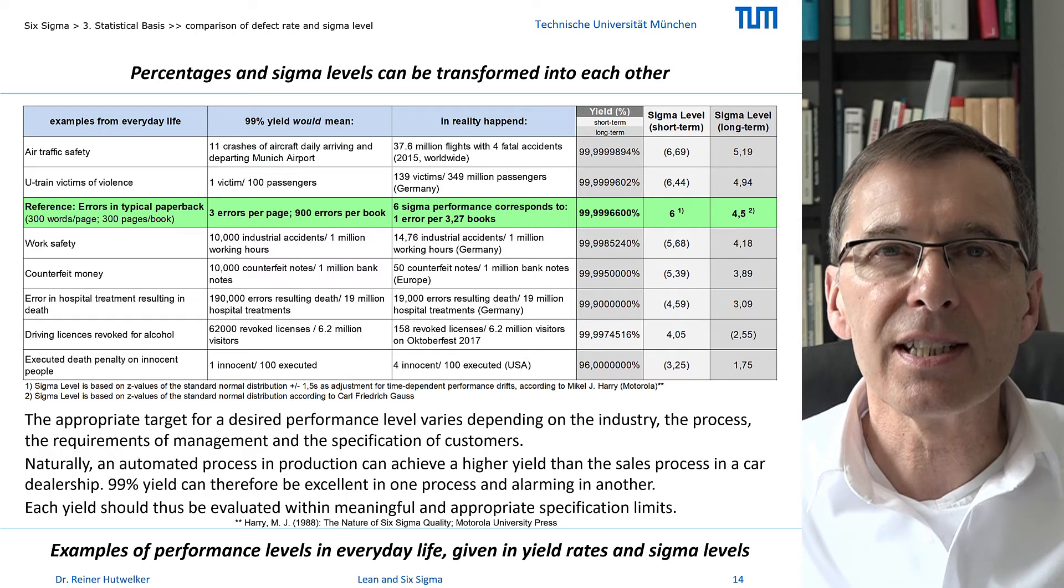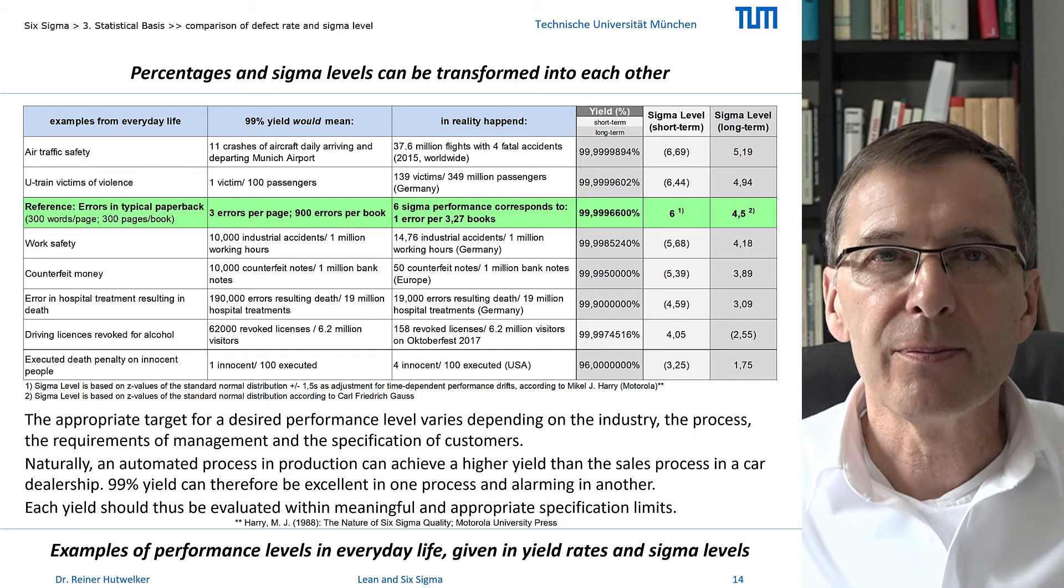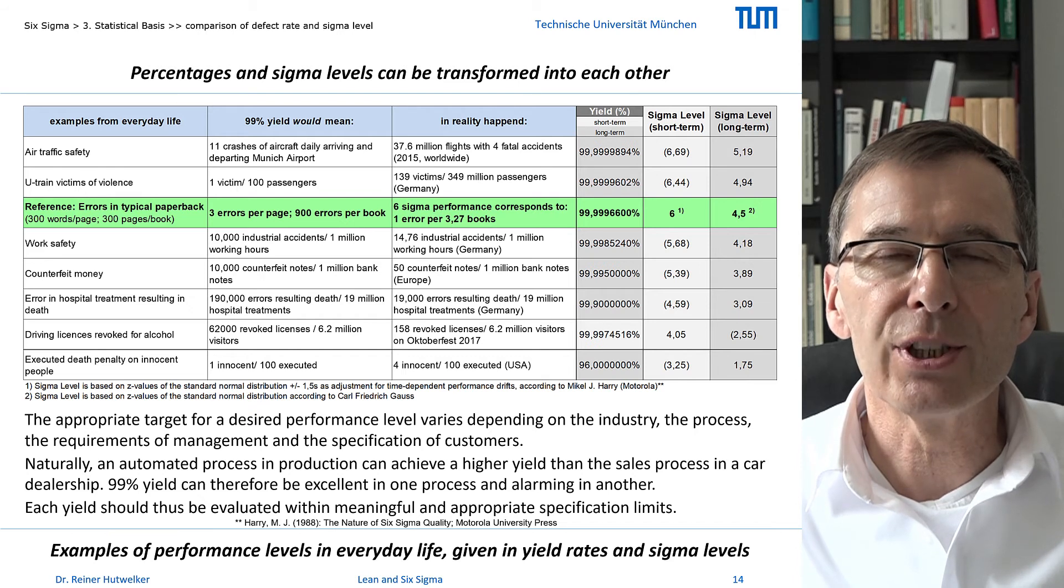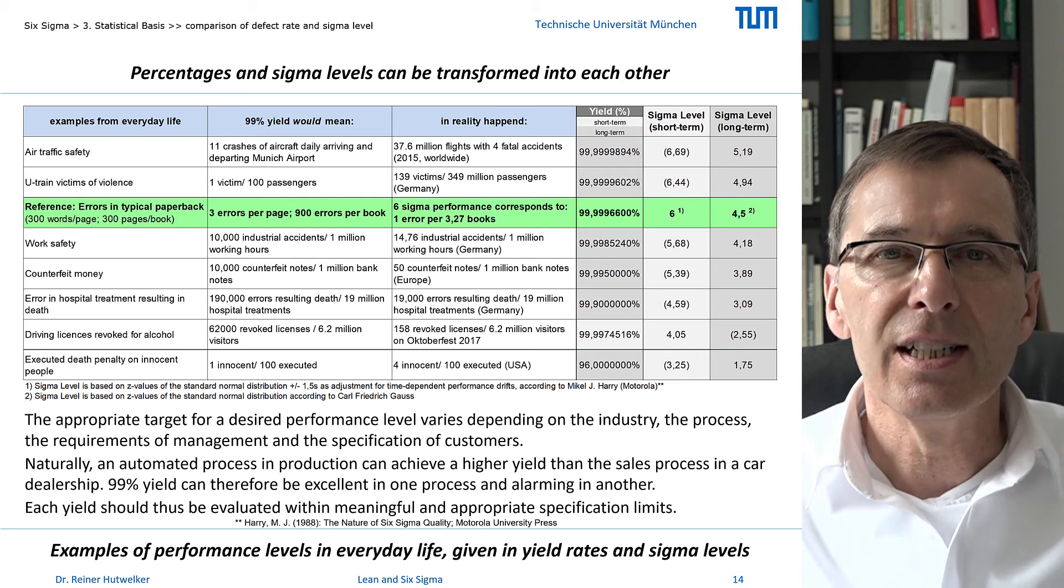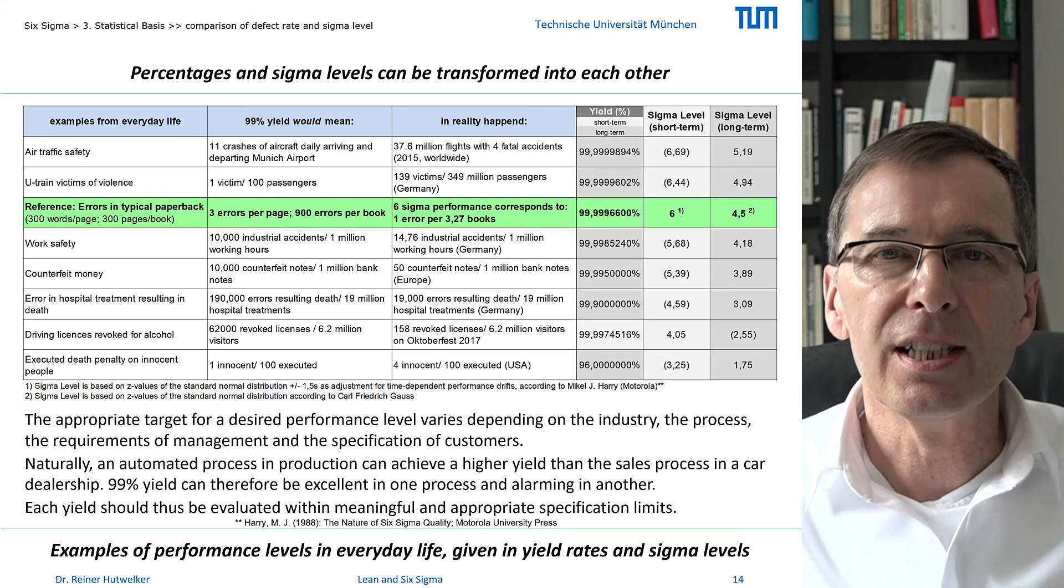What is the appropriate target sigma level for your process? The typical level at the beginning of my project is between minus 1 and plus 3 sigma. Nothing to be ashamed of. The right target level for your project, however, depends on your process and your industry. Of course, an automated process in semiconductor production can reach a higher yield than the sales process in a car dealership. On the other hand, process capability depends on the specifications of your customer and the requirements of your company. The 99% yield can therefore be excellent in one process and alarming in another.